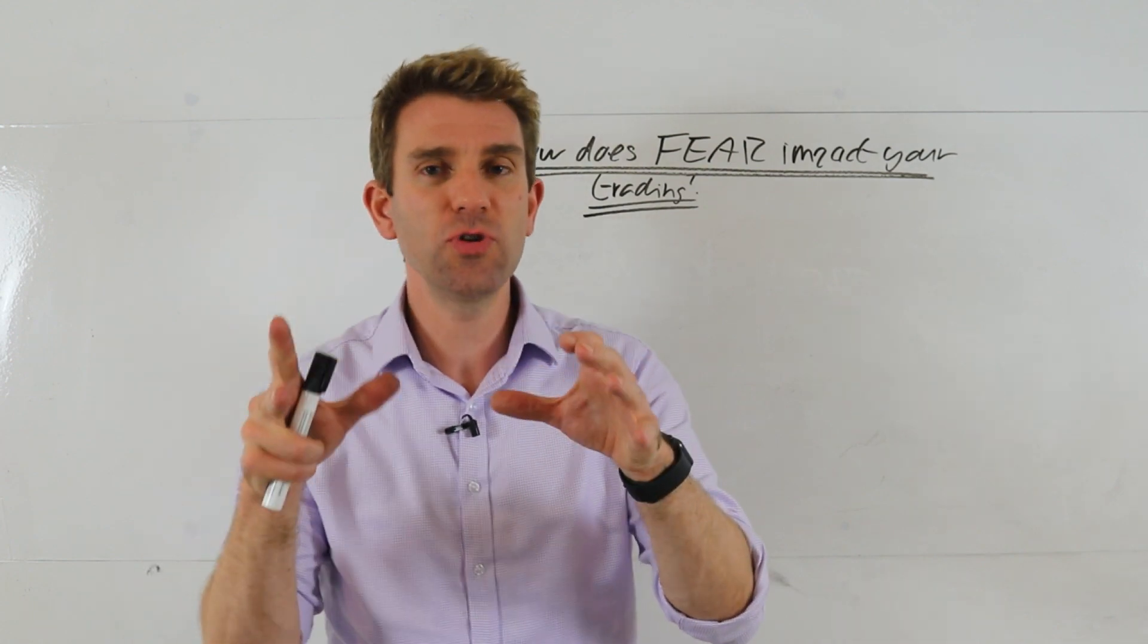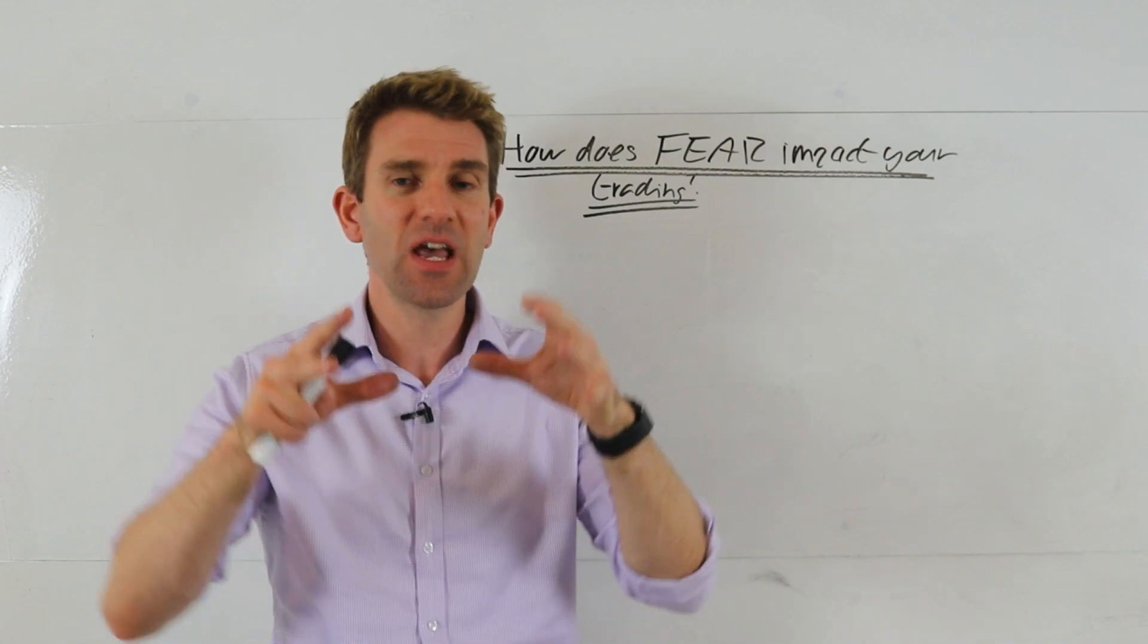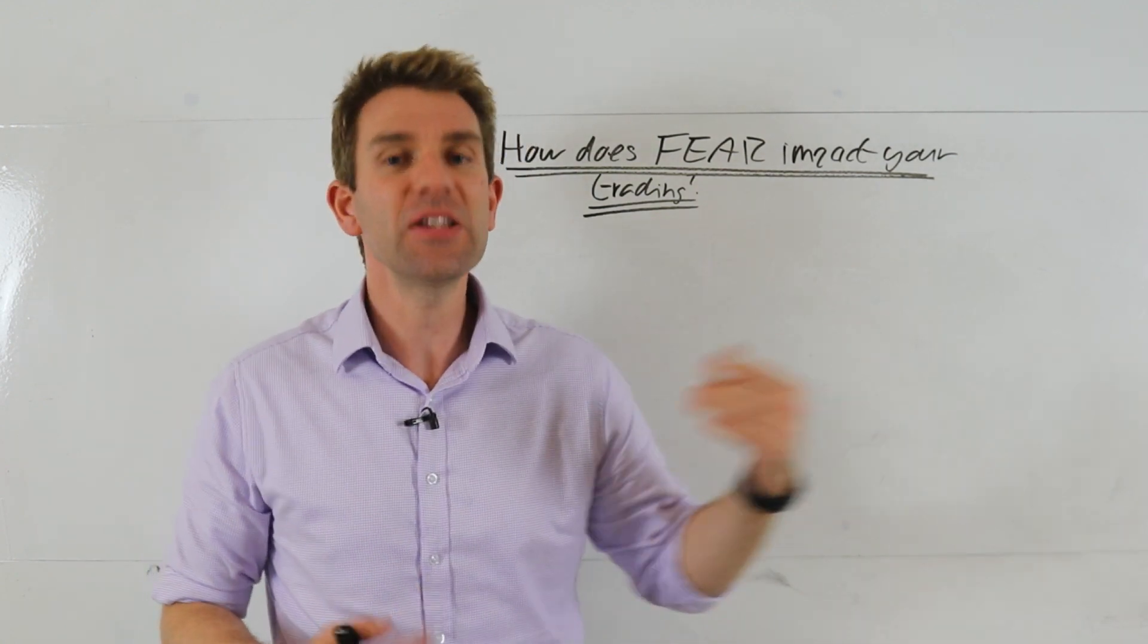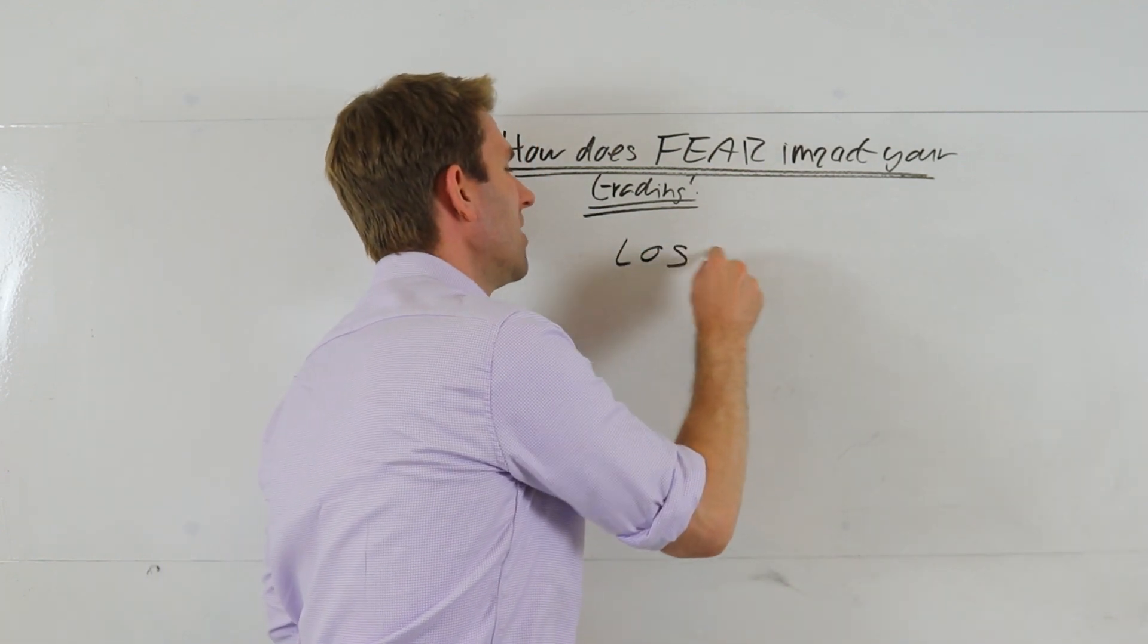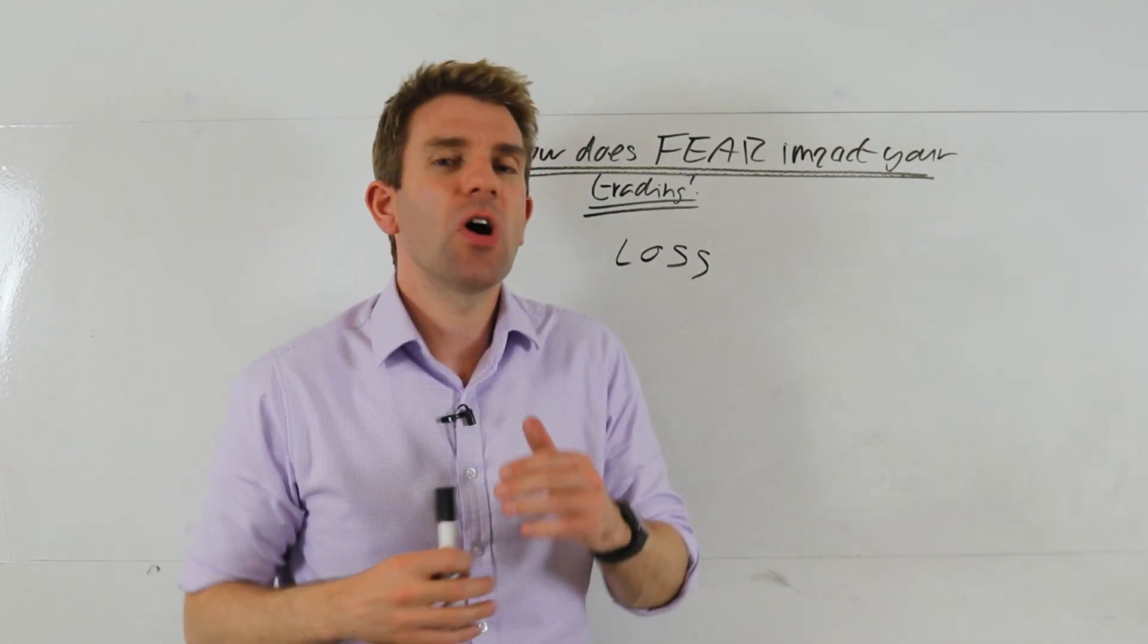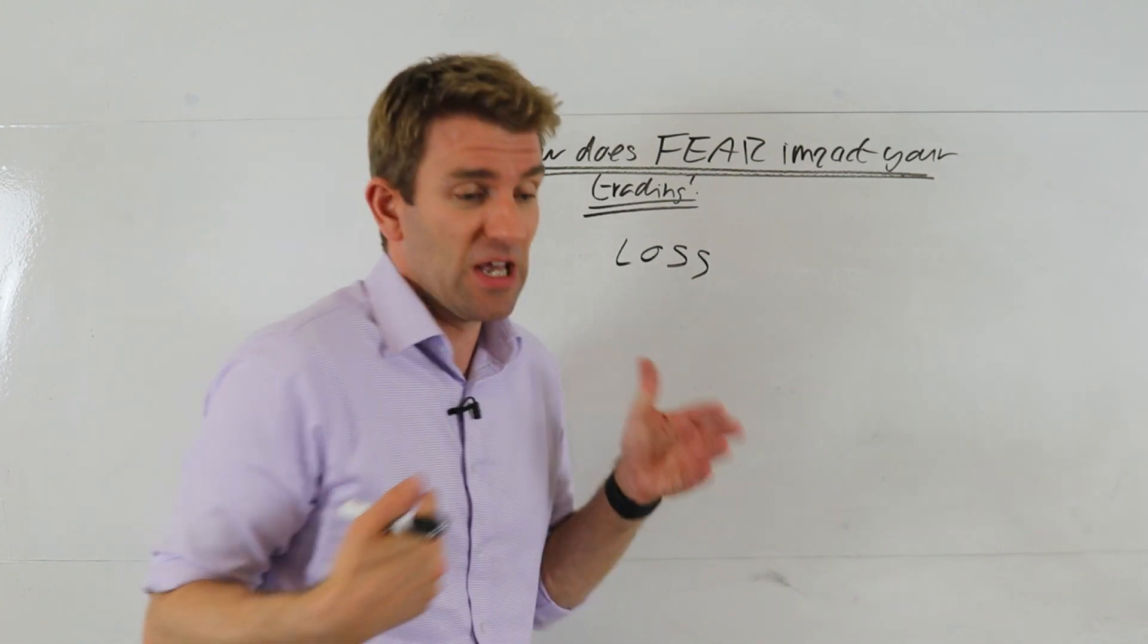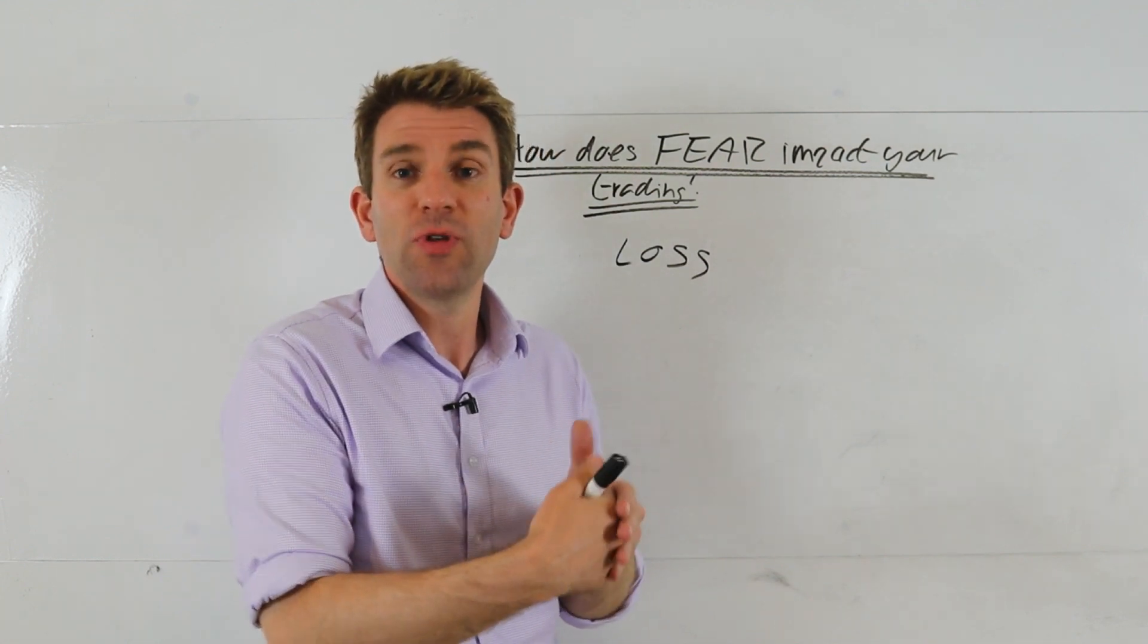And so what we start to do then, this is the point, is that we start to adapt things that we believe in real time is helping our trading. So let's look at that example of fear of loss. You fear making another losing trade. So what do you do? You might go, right, I'm going to tighten my stop up because of course that means less risk, right? Instead of risking a thousand bucks, I can risk seven hundred bucks or whatever the number may be.